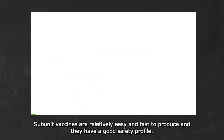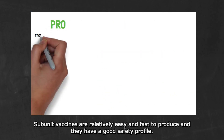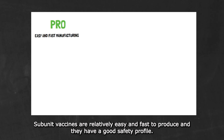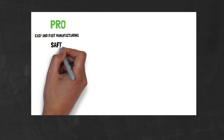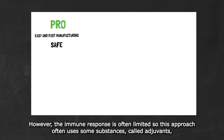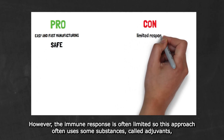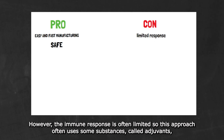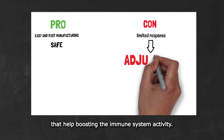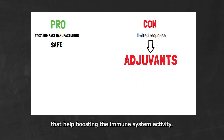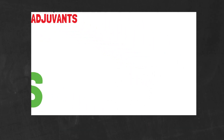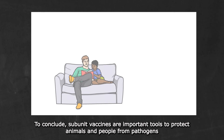Subunit vaccines are relatively easy and fast to produce and they have a good safety profile. However, the immune response is often limited, so this approach often uses some substances called adjuvants that help boosting the immune system activity.